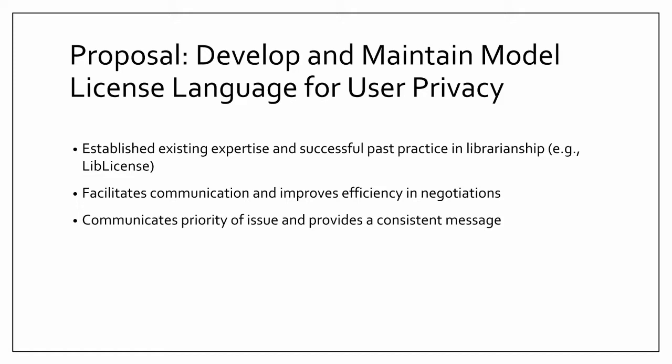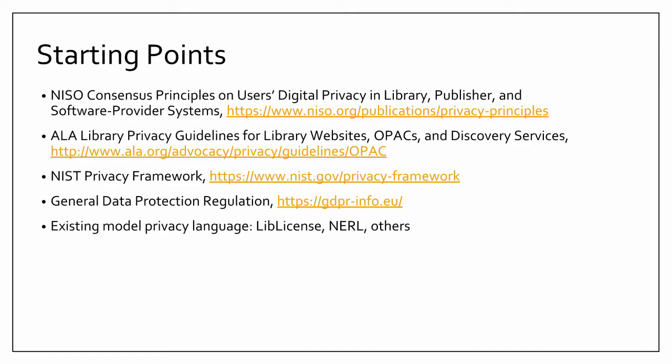It provides a consistent message — a way to let vendors know that privacy is important to libraries and this is what we want going forward. Starting points are the NISO framework, the ALA privacy guidelines, GDPR, the NIST privacy framework, and existing model privacy language. There are user privacy clauses in most existing model licenses, but there are still some gaps. For example, the LibLicense language is pretty good on restricting vendors from passing data to third parties, but it doesn't address what the vendor is doing themselves. So Elsevier can't outsource the data, but they can do whatever analytics they want on you themselves — which they probably are.